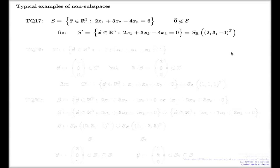That's one of the examples that appears very often in the yellow book, where the examples of this type where the zero vector doesn't belong to the set.